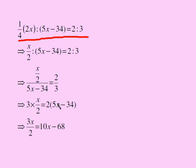Now here I can cross multiply. I'm multiplying x over 2 by 3, putting it here on the left hand side. I'm multiplying 2 by 5x minus 34 and putting it here. On the left hand side I get 3x over 2. On the right hand side I distribute 2 over 5x minus 34. I get 10x minus 68.